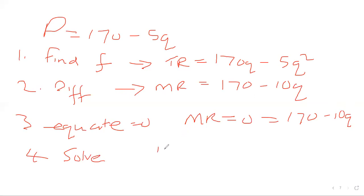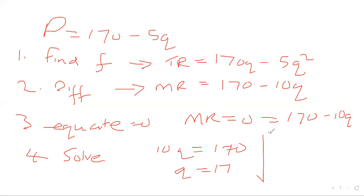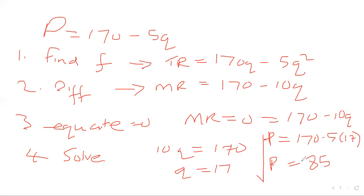Step four: solve for P and Q. When we equate 170 minus 10Q to zero, we get 10Q equals 170, so Q equals 17. Then we go back to the price function and put 17 for Q: P equals 170 minus 5 times 17, so our price is 85. This is optimization — finding the best price.